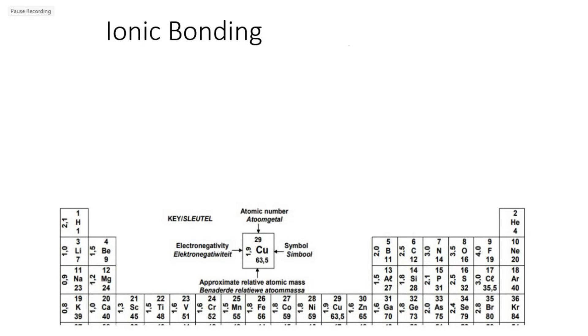In this lesson we are going to look at ionic bonding. Ionic bonding is a type of bonding that takes place between metals and non-metals.